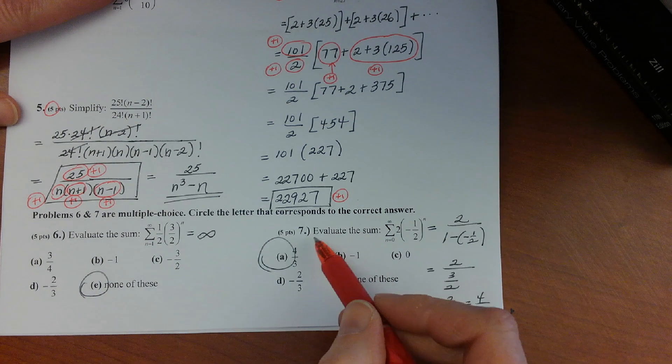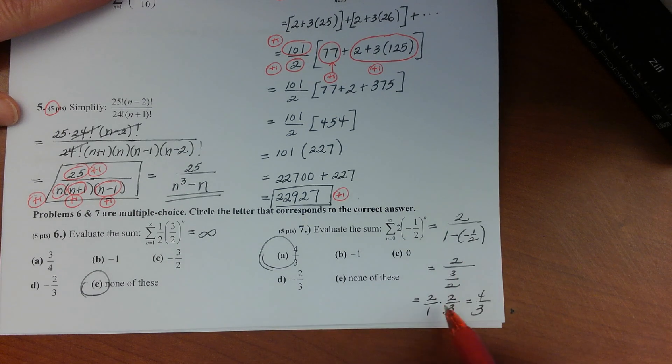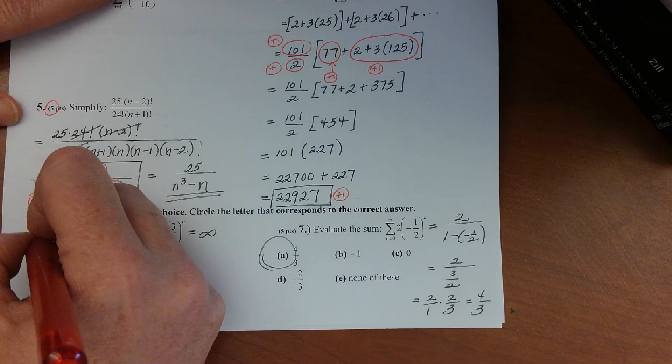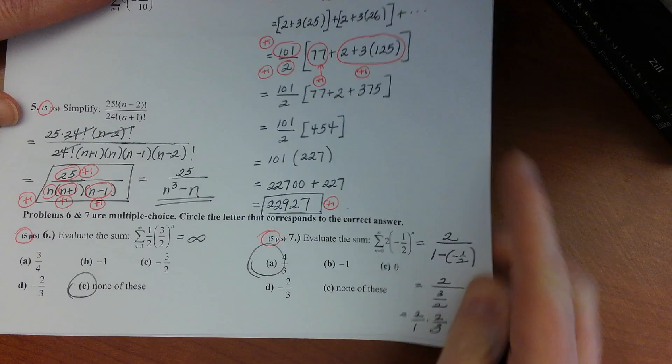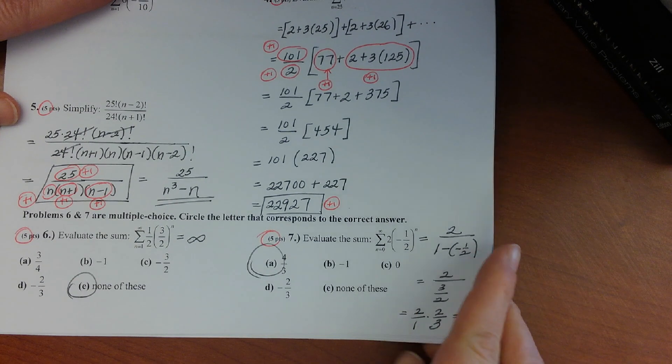And then problem seven, this is pretty typical of what you would need to show for that. So you'll have to have some work to qualify to get credit, but there's no partial credit. I know that's horrible, but that's how it goes.